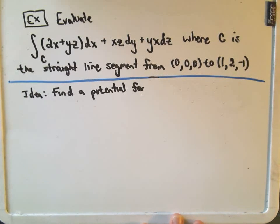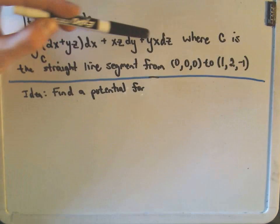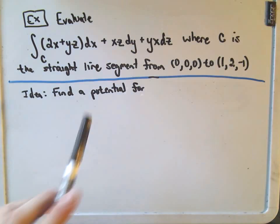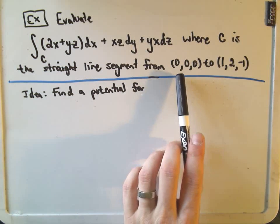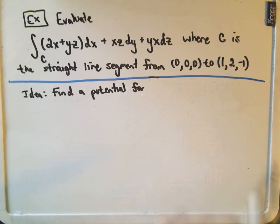So let's do a quick example here. Suppose we want to evaluate this line integral: 2x plus yz dx plus xz dy plus yx dz. C is going to be the straight line segment from the origin to the point.